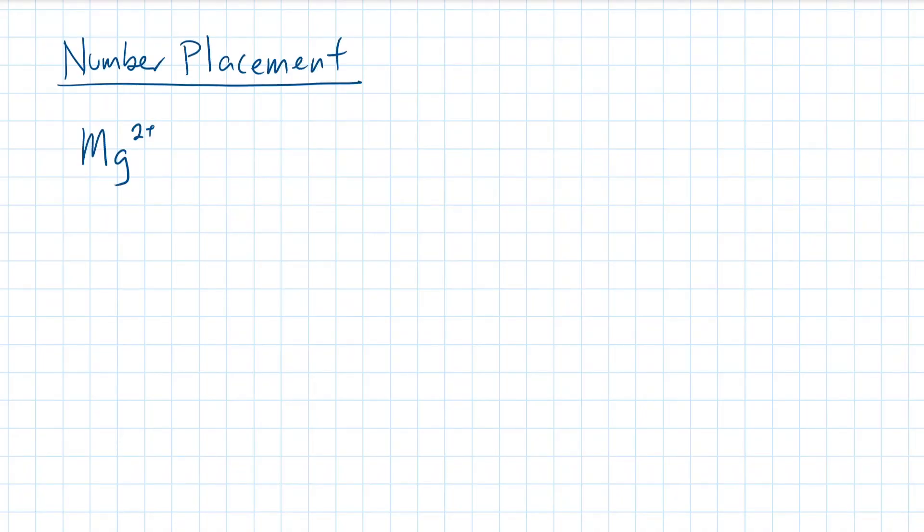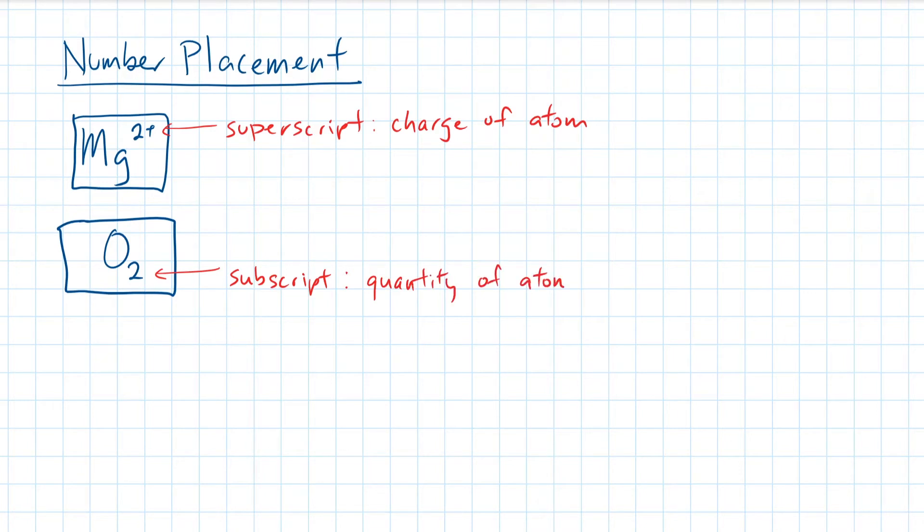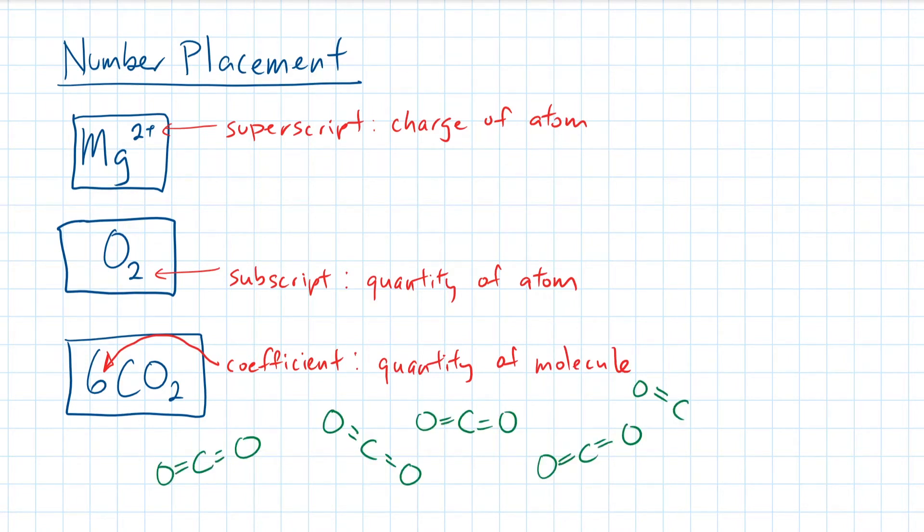Here we have the number 2 written in superscript. Numbers written here indicate the charge of an atom or molecule. And here we have the number 2 written in subscript. Numbers written here indicate the quantity of the atom listed to the left. In this case, O2 describes two oxygen atoms. The 6 placed at the front of this molecule is known as the coefficient. This tells the chemist that 6 molecules of carbon dioxide are needed in an experiment.